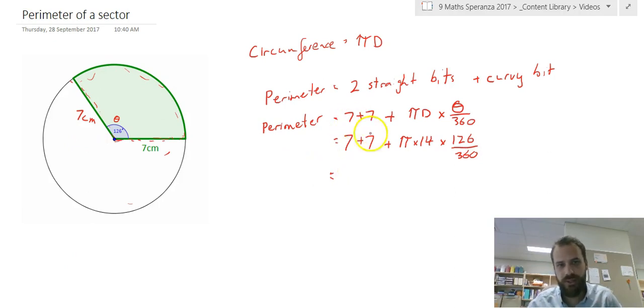Now if I type that into my calculator, it'll be 29.39. Now because this is perimeter, it's length, so that's just centimeters. That's the perimeter of a sector.